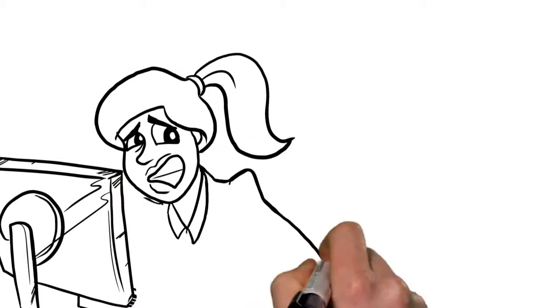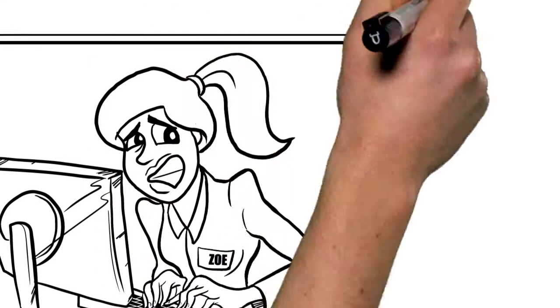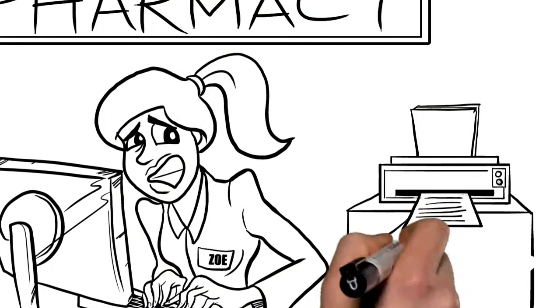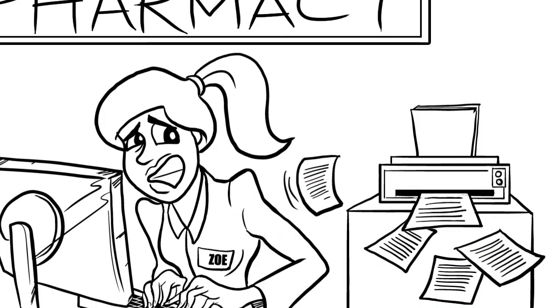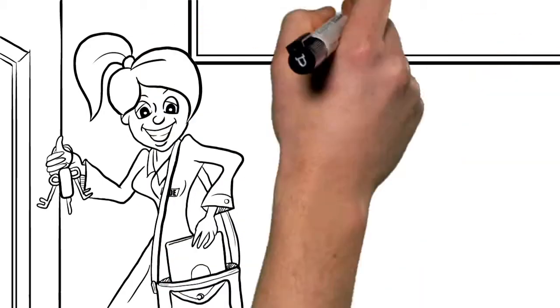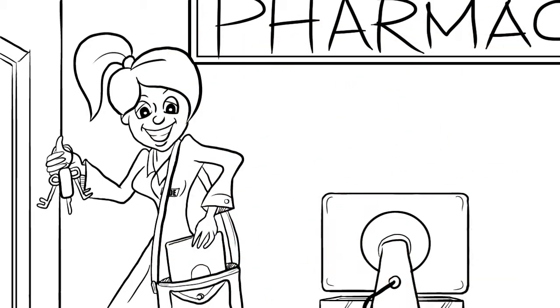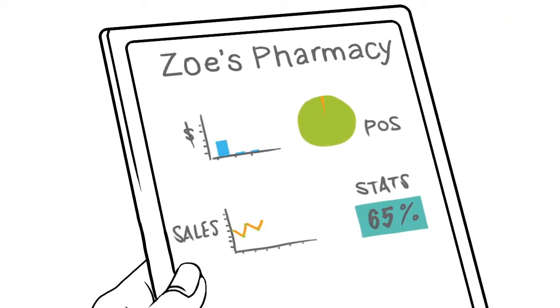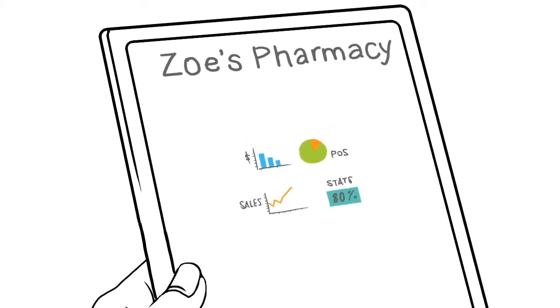So next time Zoe heads out to do her rounds at the nursing home, she won't need to pre-print all her medication charts or patient information like she has to do now. She can just grab her tablet and look up patient information as she needs it. And best of all, she can even keep an eye on the pharmacy sales for the day, all while she's away from the pharmacy.